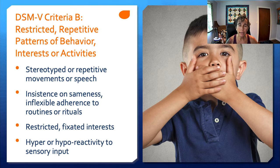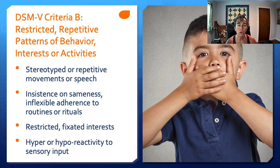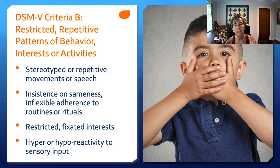Finally, hyper or hypo reactivity to sensory input. This is new in the DSM-5, and it's the first time sensory processing and integration — which is right up our alley in OT — has been included. It's a very awesome inclusion for us as therapists to have this aspect of autism recognized and noted.